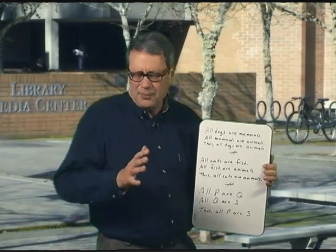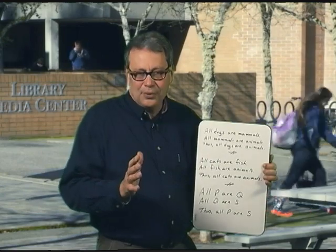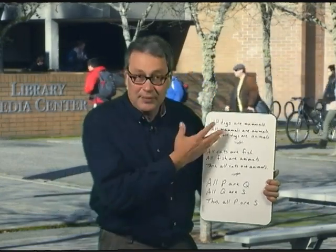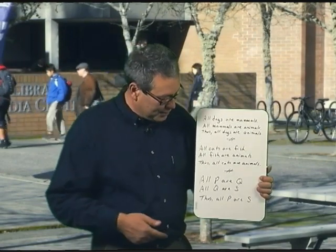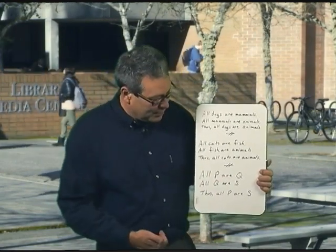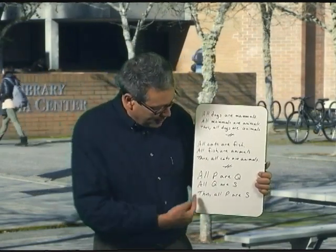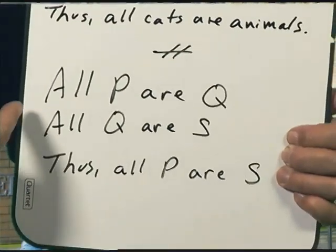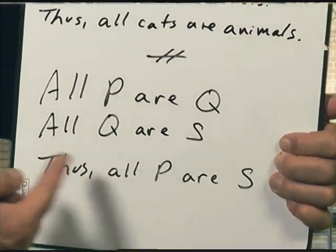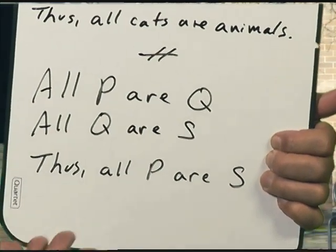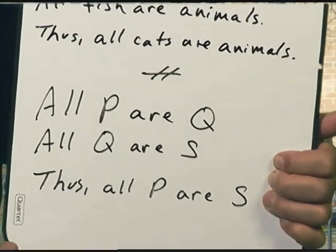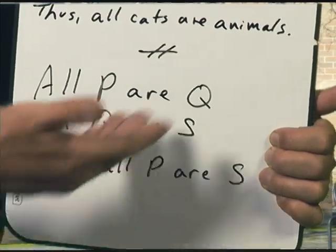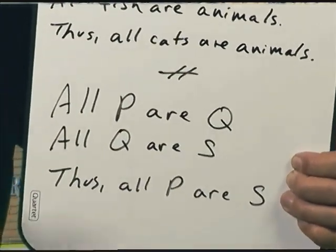We're going to get to the point where we don't even have to look at the English. It'll actually be much easier once we get into a more abbreviated pattern. Check this argument here — you don't even know what I'm talking about because you don't know what P, Q, or S stands for. But I bet all of you could see it's a valid argument. If all P are Q, and it's also true that all Q are S, you can see that it would be absolutely guaranteed that all P are S.